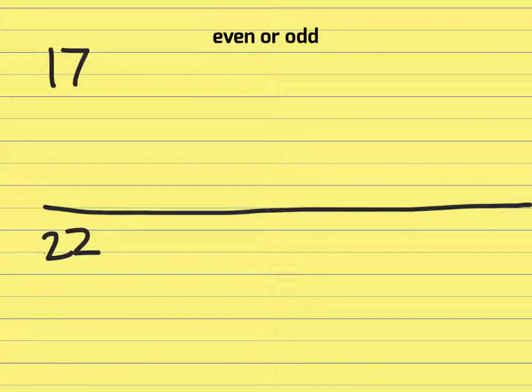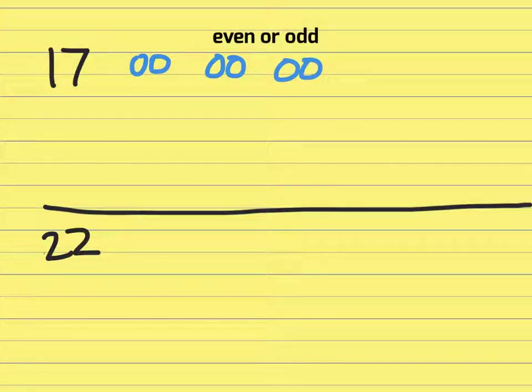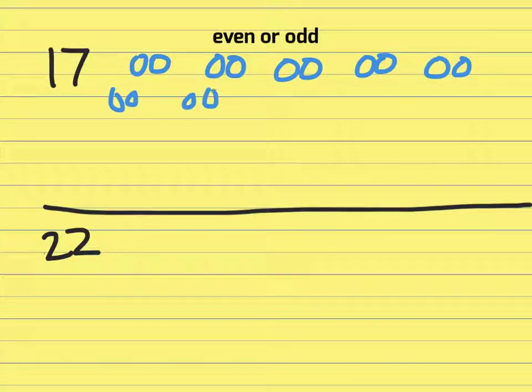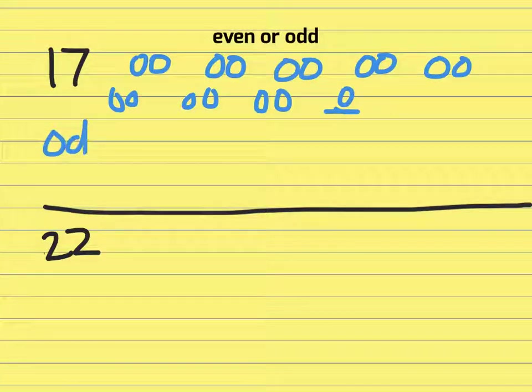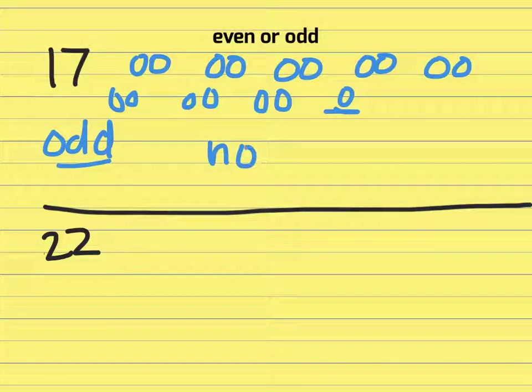One, two, three, four, five, six, seven, eight, nine, ten, eleven, twelve, thirteen, fourteen, fifteen, sixteen, seventeen. That last circle doesn't have a partner. So 17 is an odd number. So I'll say odd and then I'll say that it has no partner.